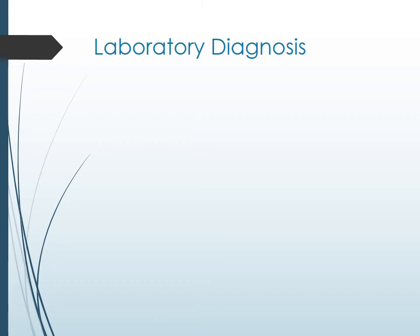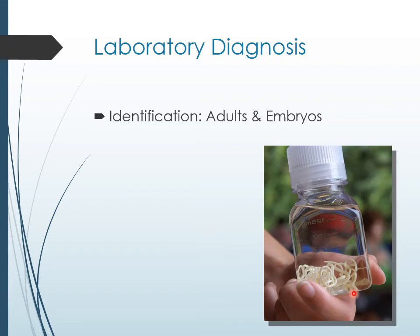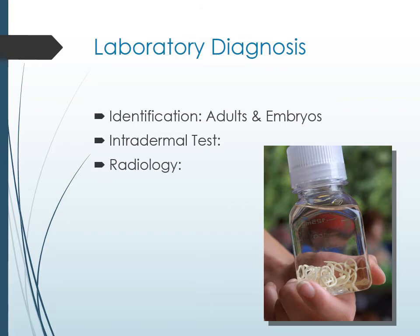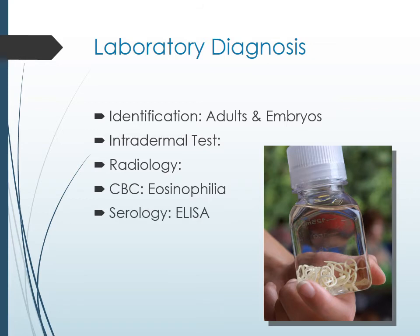For lab diagnosis, the symptoms are largely self-diagnostic. The adult worm can be visually identified as it emerges, and from the discharge fluid, plenty of embryos can be found. Intradermal tests are available as hypersensitivity tests — injecting the antigen produces a hypersensitivity reaction. On X-ray, the female worm can be seen in the subcutaneous tissue. In CBC, there is marked eosinophilia, characteristic of parasitic infections. Serology using ELISA can detect antibodies against this parasite.